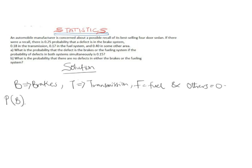We are given that the probability of a defect in the brake system, P(B), is 0.25. We are also given that the probability of a defect in the transmission system, P(T), is 0.18.